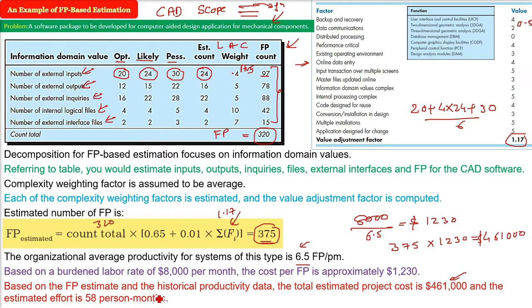How to get the person month? For that you already know this is 375 and just divide it with the 6.5 already given that. So you get 58. It will be actually 57.69 and assume it to be 58. 58 person month will be the value. So this is an example of FP based estimation.